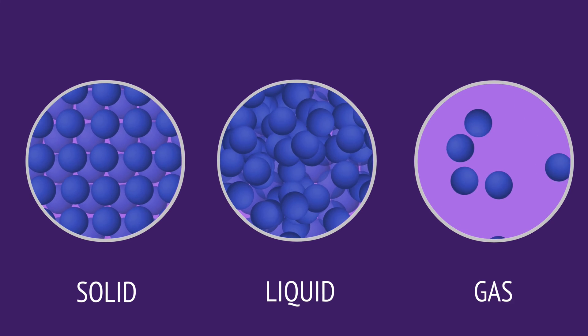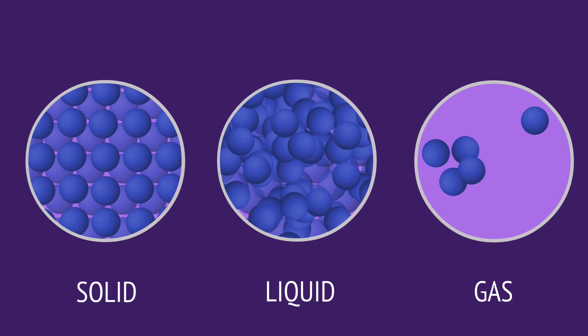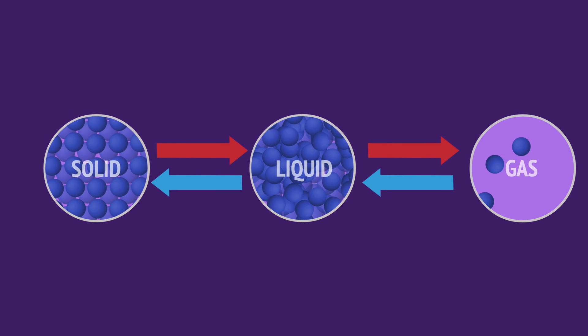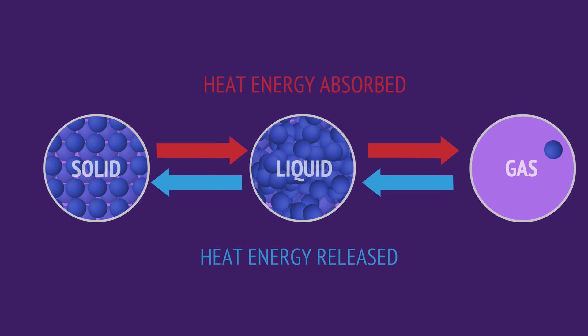Matter exists on Earth in one of three main states. Substances can transition between these states as heat energy is absorbed or released by the substance.